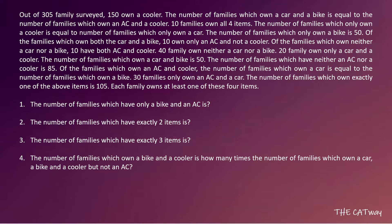Welcome to this video solution of set number 9. Out of 305 families surveyed, 150 own a cooler. The number of families which own a car and a bike is equal to the number of families which own an AC and a cooler. 10 families own all four items.